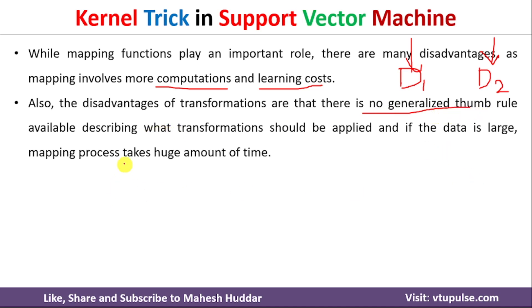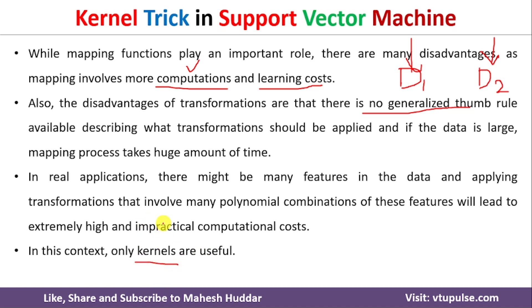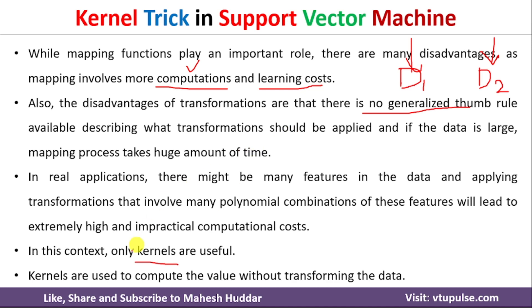When the dataset becomes too large, it takes a lot of time to transform data from one space to another, along with high computational cost. So in this case, we need to use something called kernels. Kernels are used to compute the value without transforming the data. Instead, we use the dot product to represent low-dimensional data in high-dimensional space.